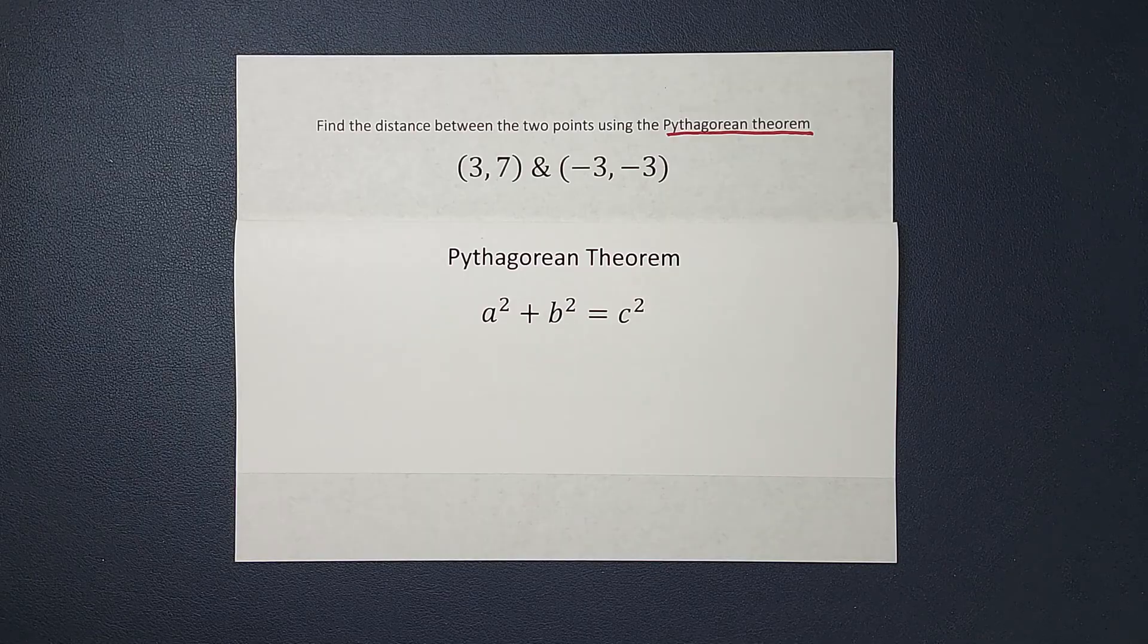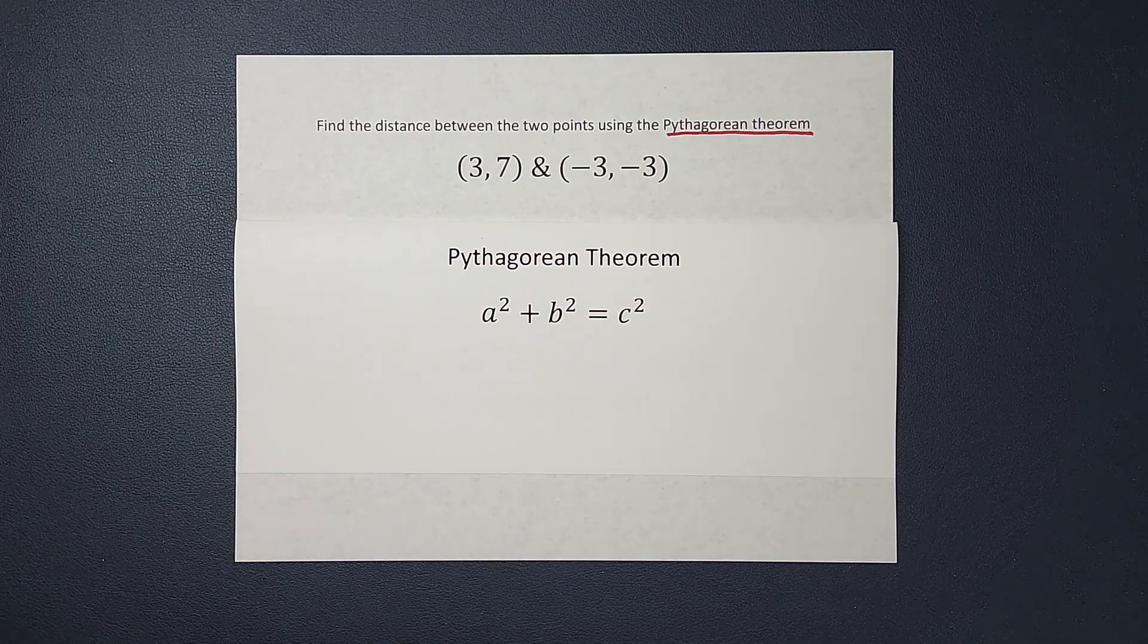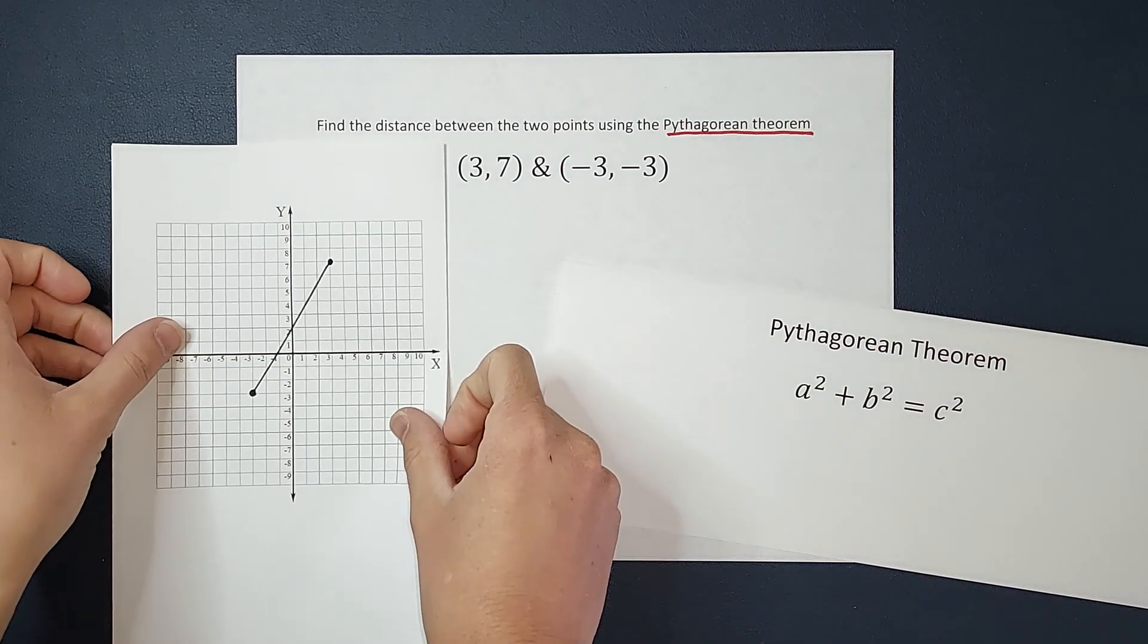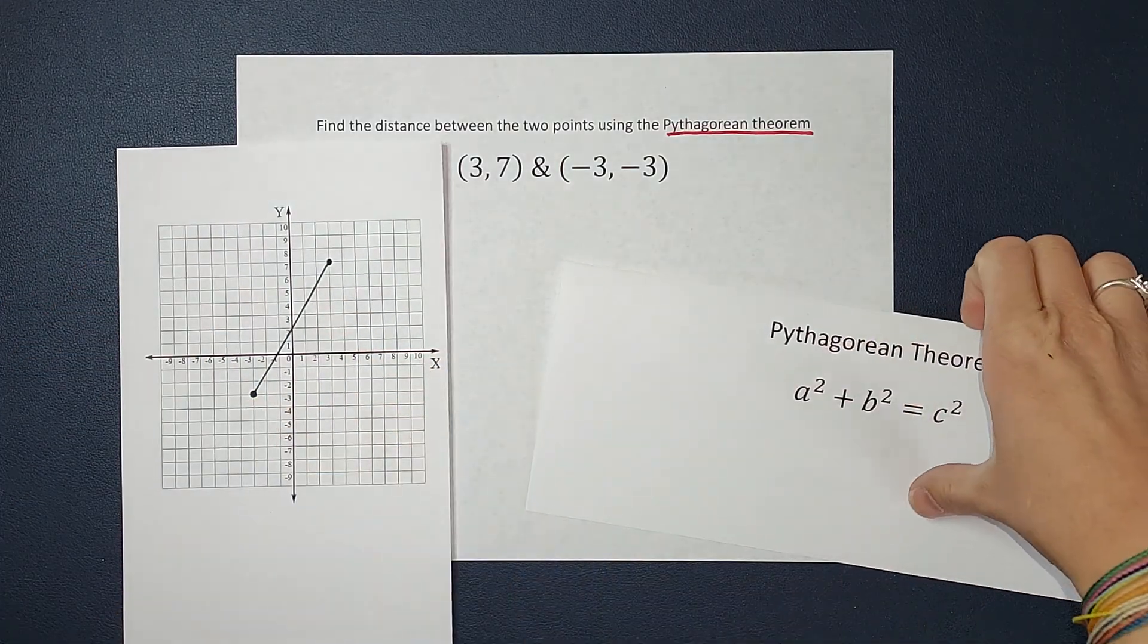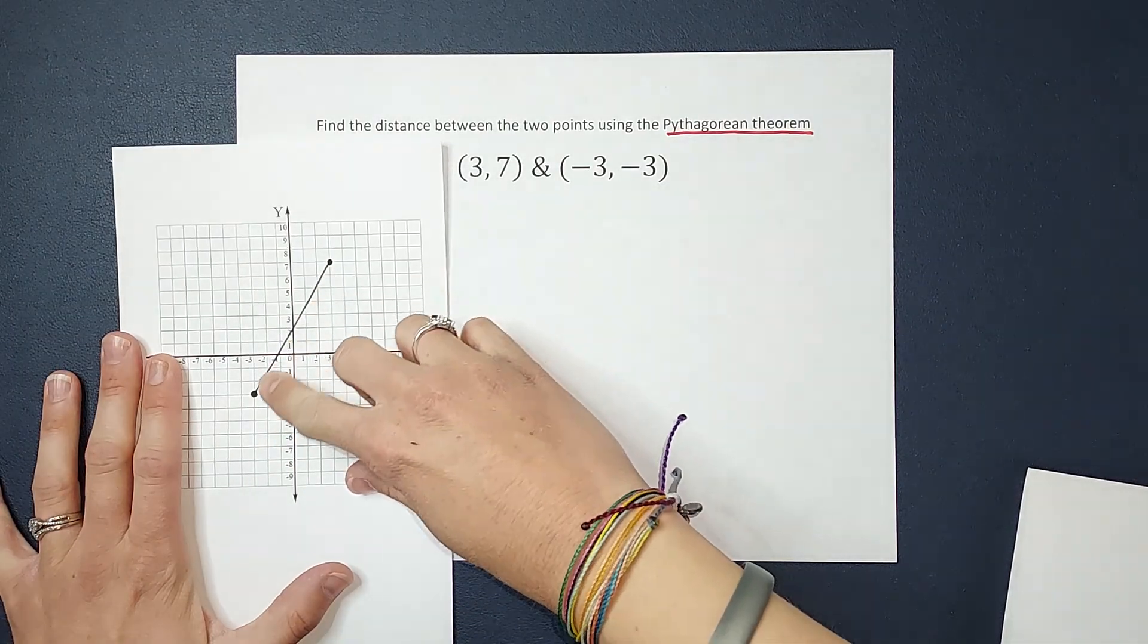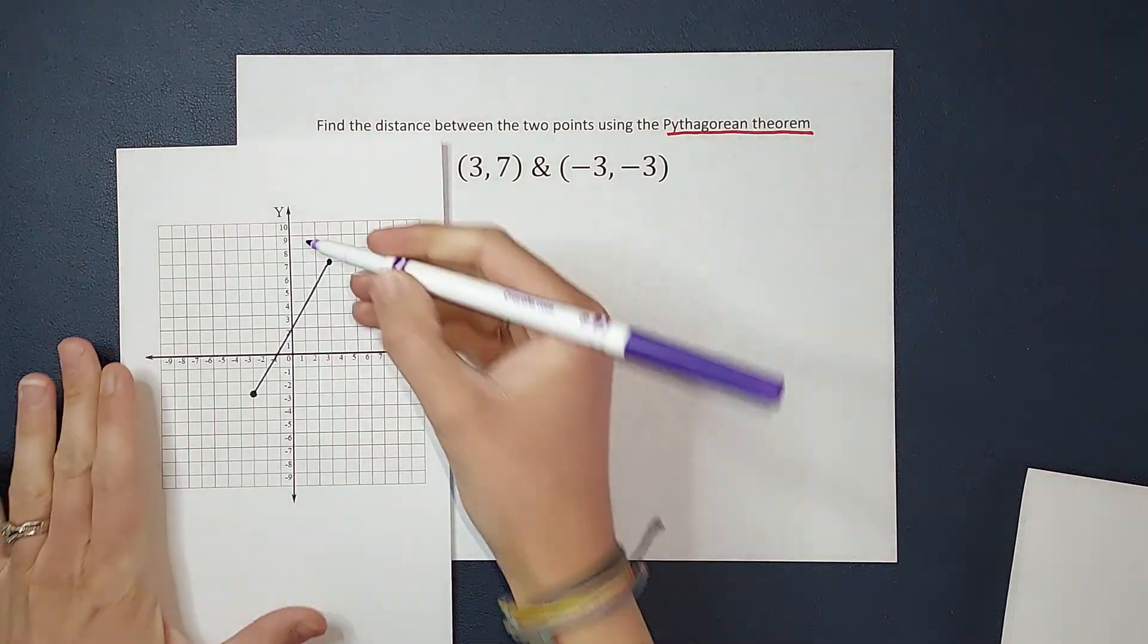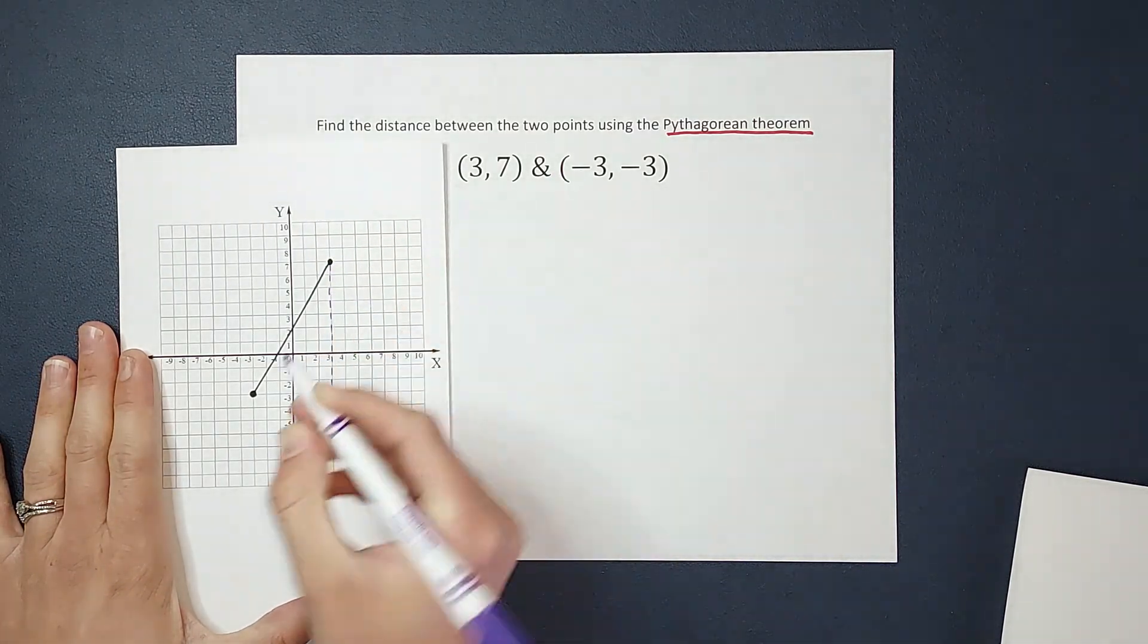Pythagorean Theorem - we are talking right triangles. So how is a right triangle supposed to help me find the distance between these two points? Here they are plotted on my coordinate plane. That's my (3,7) and (-3,-3). So what we want to do is make this line the hypotenuse of a right triangle. We're just going to make a triangle.